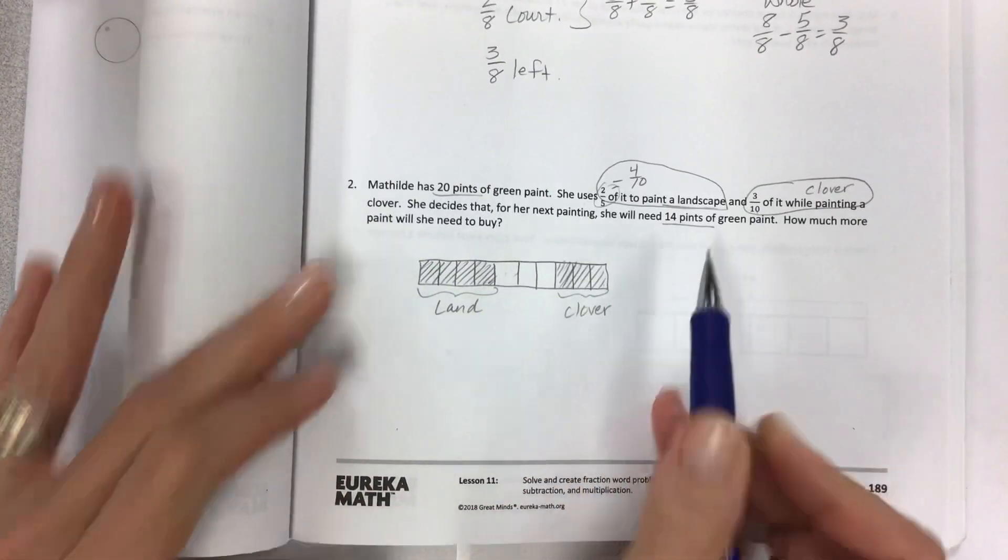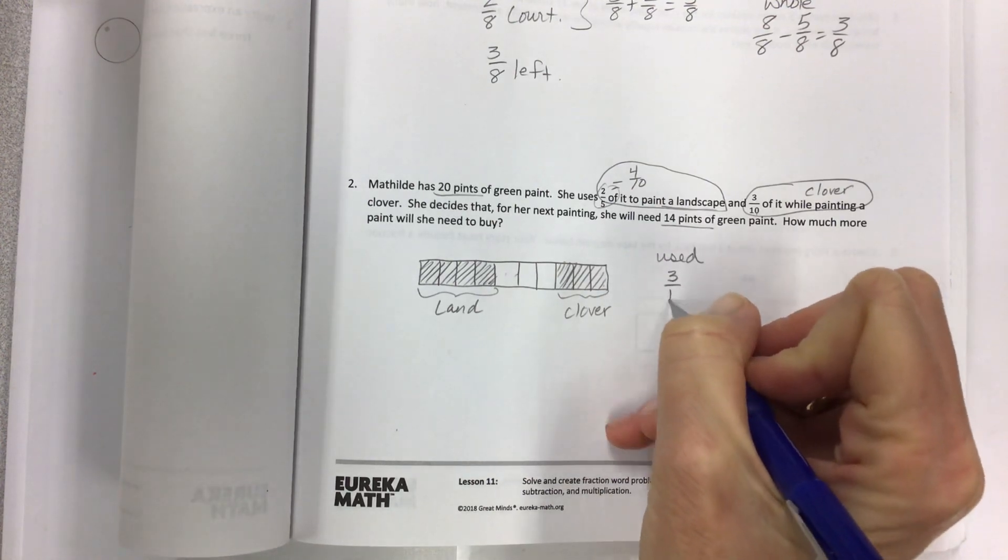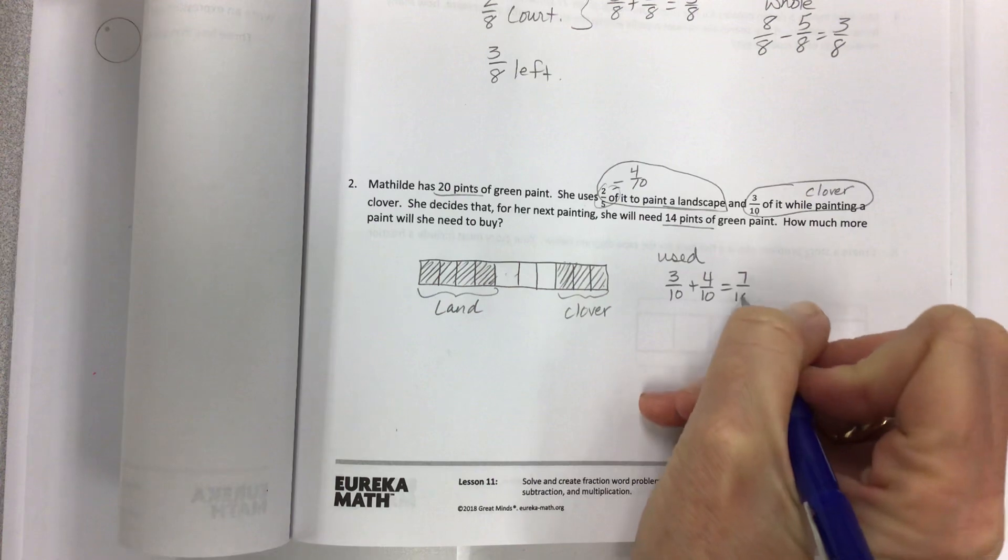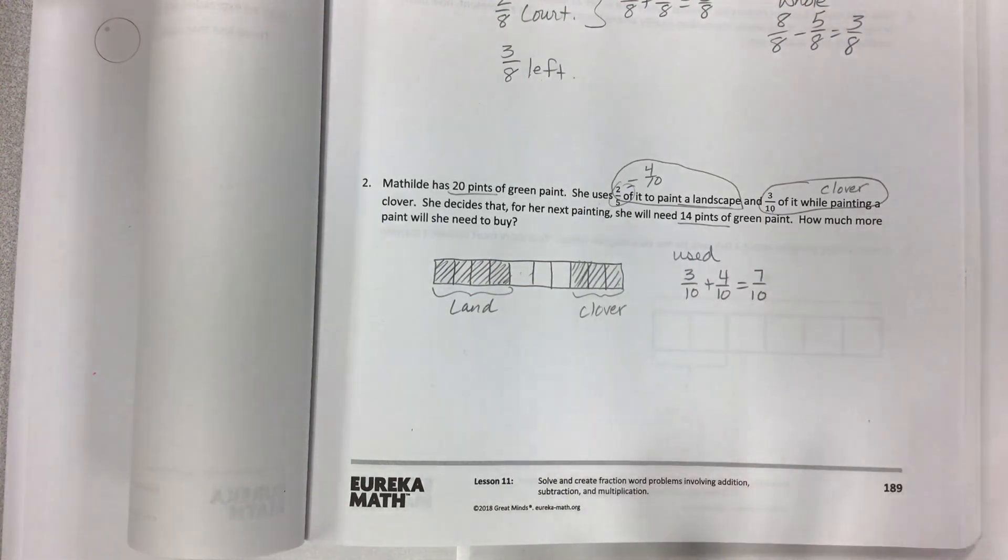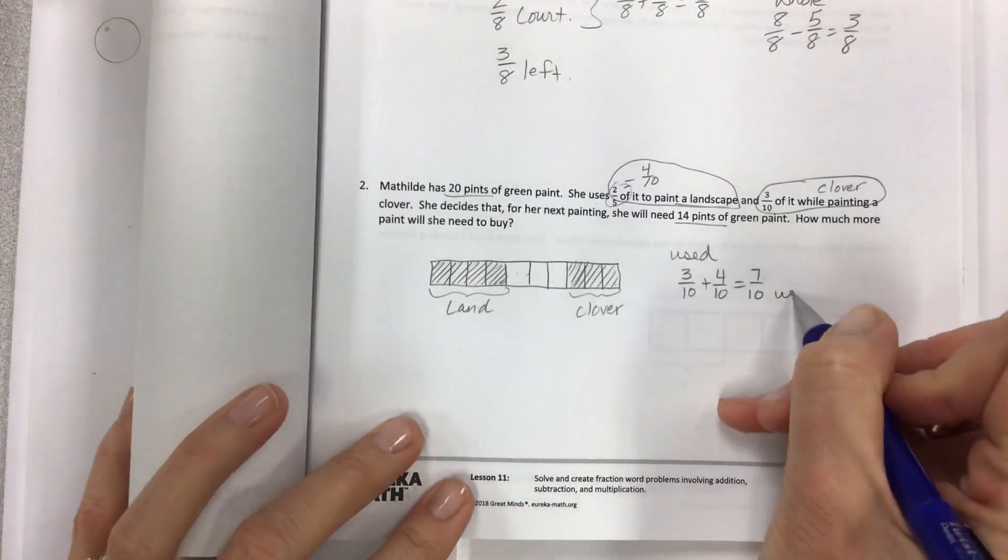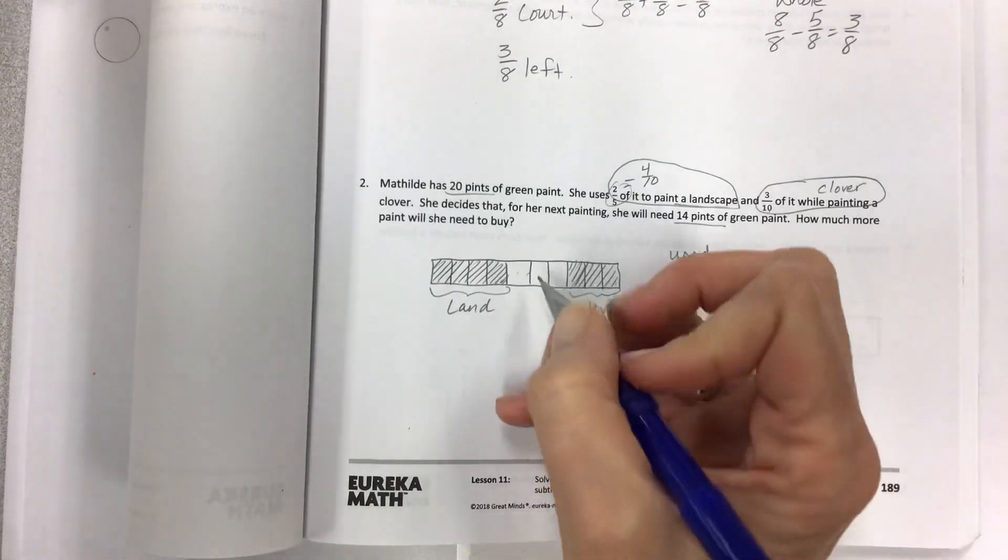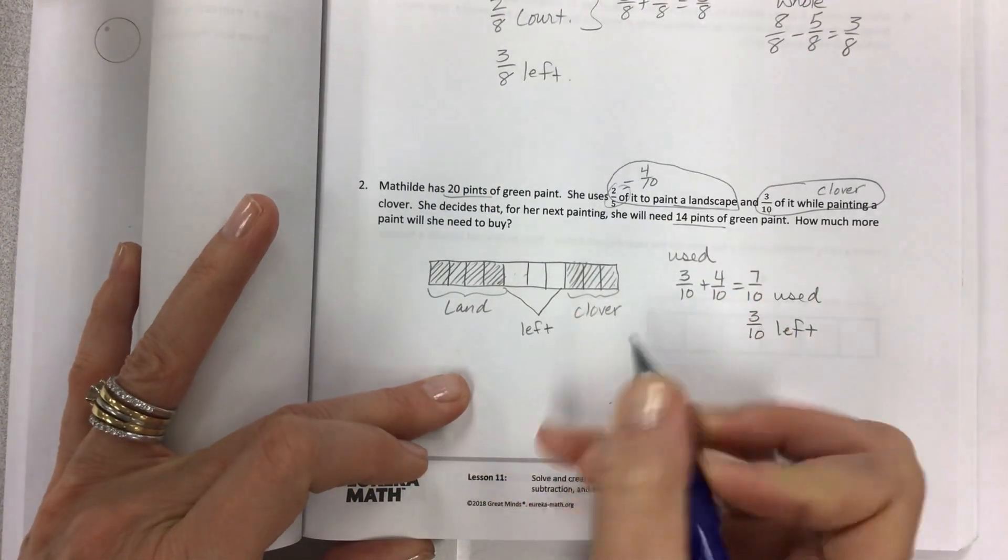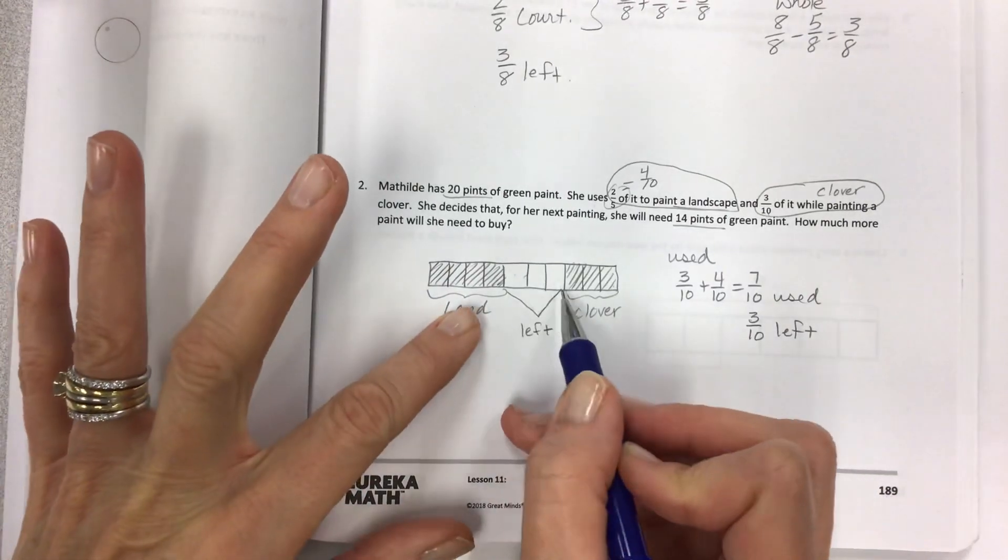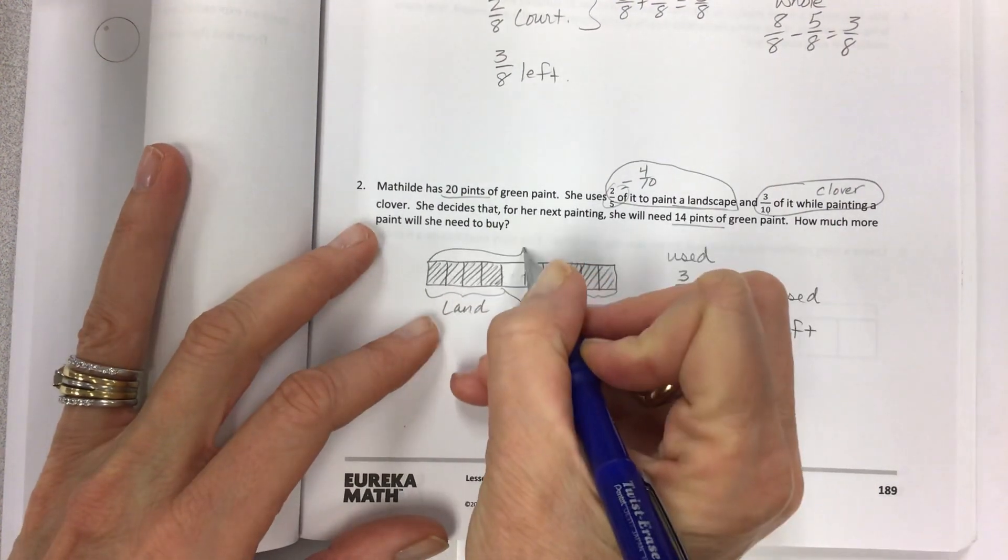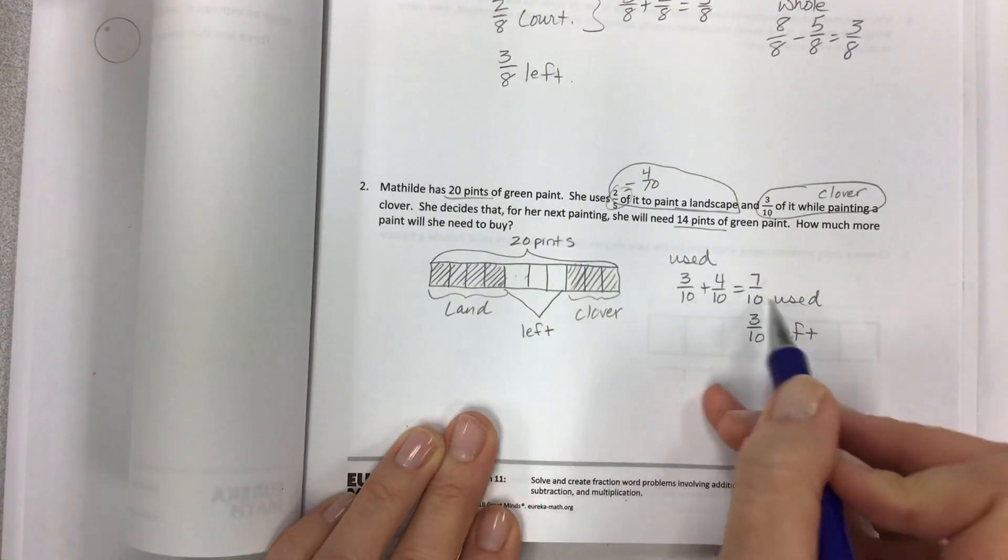Now for her next painting, she will need 14 pints of green paint. So let's figure out what we have used. Three tenths plus four tenths is going to show you that seven tenths are used. Now why do I need this? Because I need to figure out the pints. Actually, this is what's used. And that means three tenths are left.